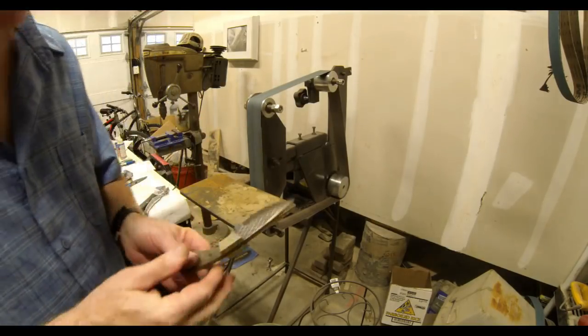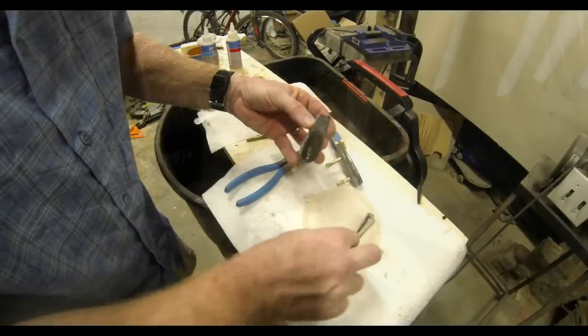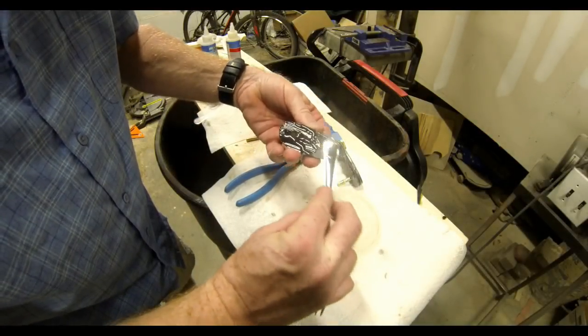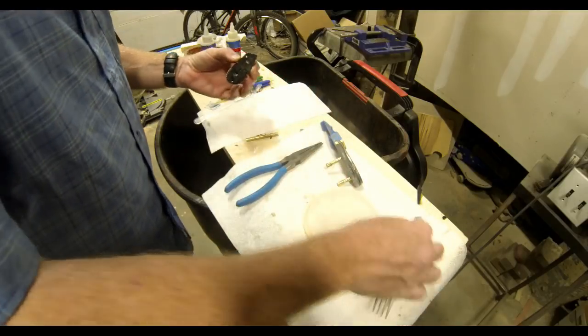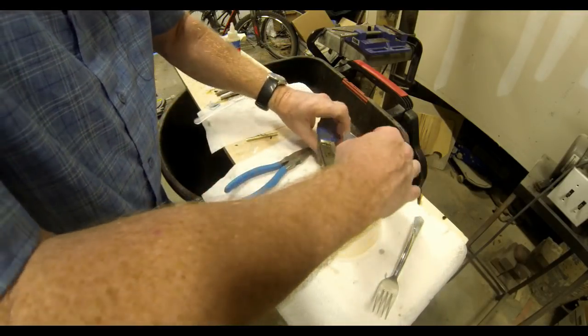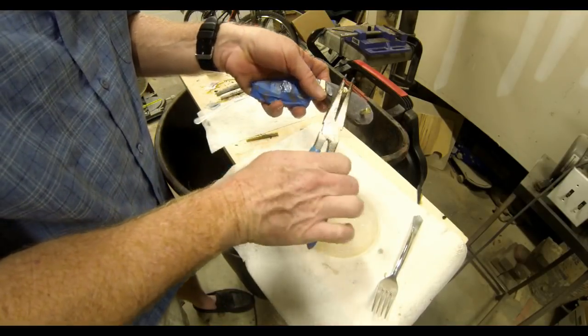Now the bolsters are glued and pinned in position on the blade. They still haven't done the final grinding on those bolsters to bring them down to the top edge of the tang. I'm going to move over onto gluing and attaching those sponge micarta scales onto the blade.